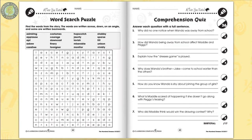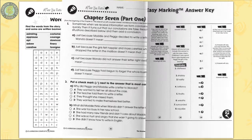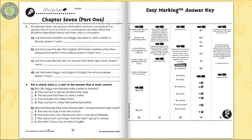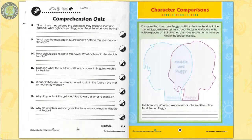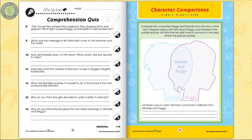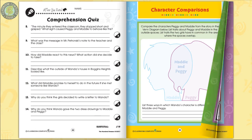A word-search puzzle and comprehension quiz ends the unit. The easy marking answer key works by lining up perfectly with the matching question pages. Three-color posters, which are graphic organizers, complete the resource.